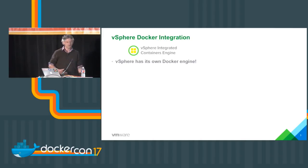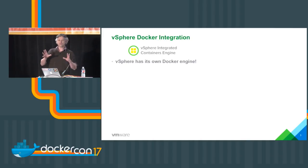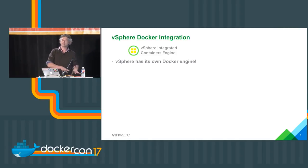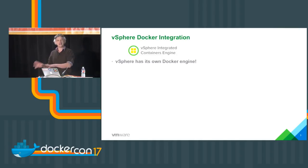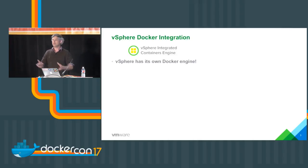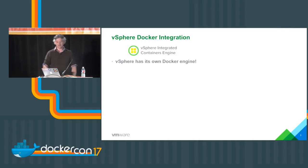VIC Engine is a Docker engine for vSphere — it's as simple as that. What it means is I can control vSphere from a Docker client. If I type 'docker network ls' I see vSphere networks; if I type 'docker volume create' I create a disk on a vSphere datastore; and if I type 'docker run' I get a VM. We're going to see exactly how that works in the demo.